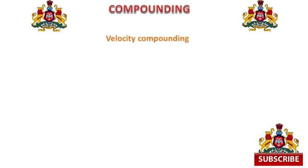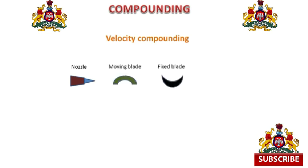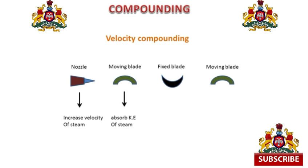What is velocity compounding? First, let us discuss the parts used in velocity compounding for measurement of pressure and velocity. We have a nozzle, then a moving blade, then a fixed blade, and a moving blade. The nozzle is used to increase the velocity of steam. The moving blade absorbs the kinetic energy of steam. The fixed blade simply directs steam to the moving blade.